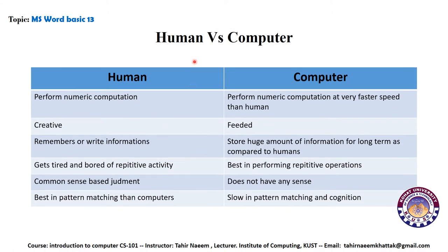Now we will discuss the characteristics of human and computer and compare them. The first characteristic is that humans can perform numeric computation — we are able to add, subtract, multiply numbers and perform different numerical computations. Computers can also perform numeric computation, but the major difference is that computers perform numeric computation at a very fast speed.